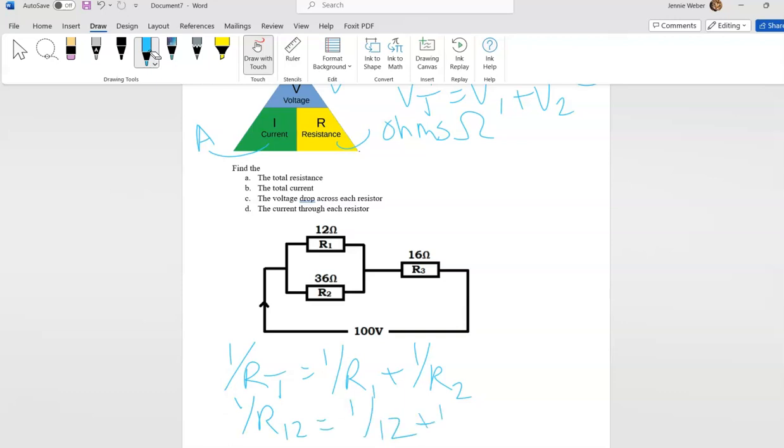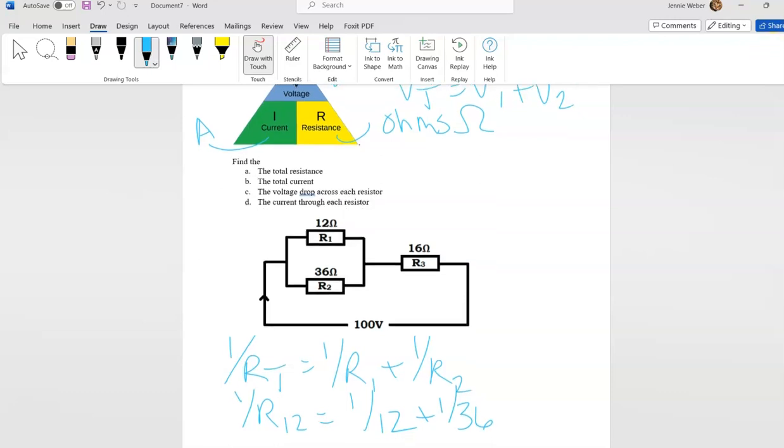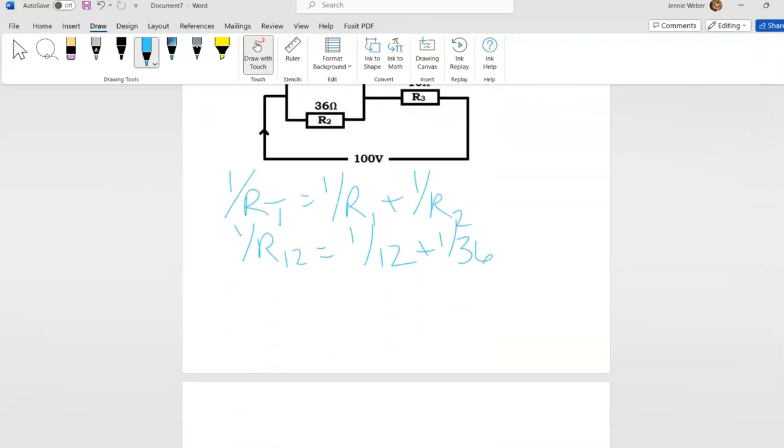So then R1 is 1/12 plus 1/36. So now to find this I'm going to add this side, so I need to make this into a 36. This is going to be 3/36, 1/36.